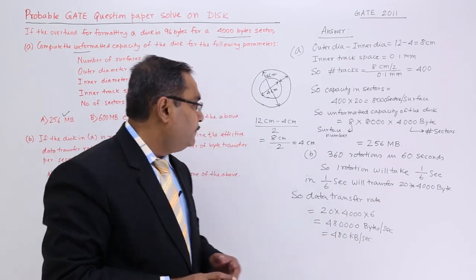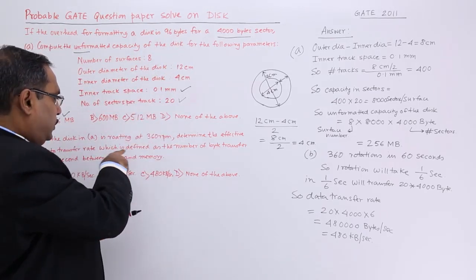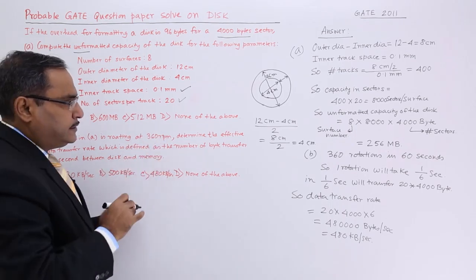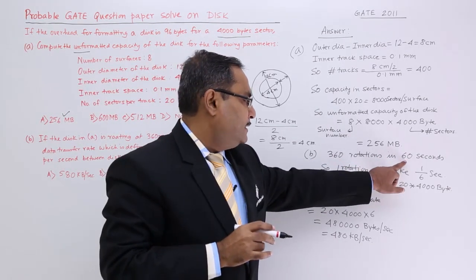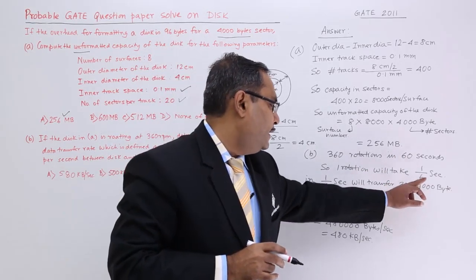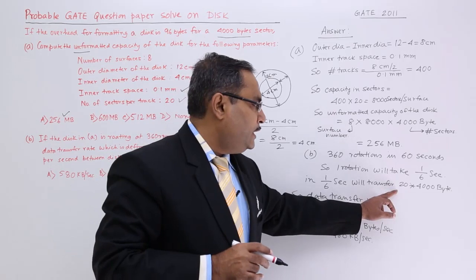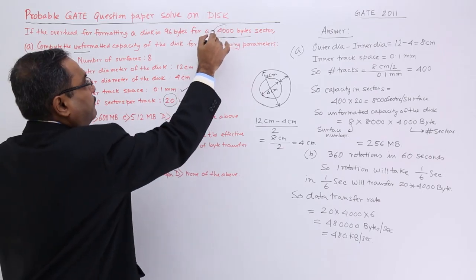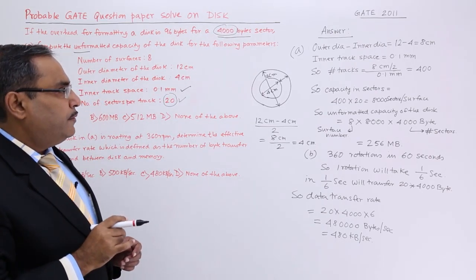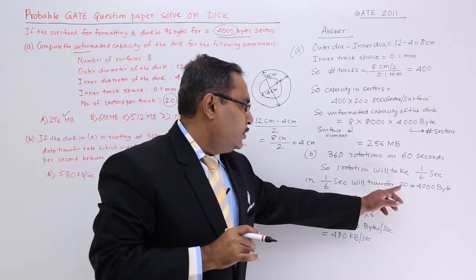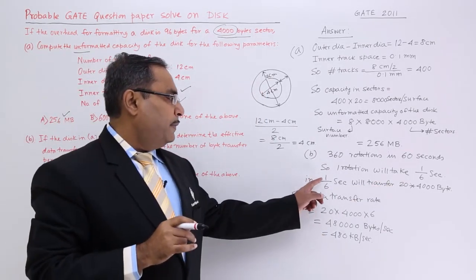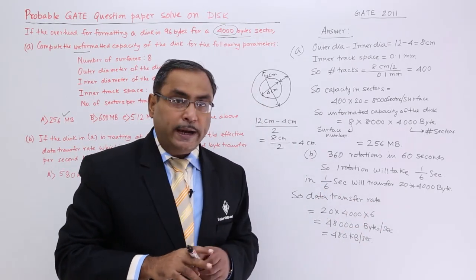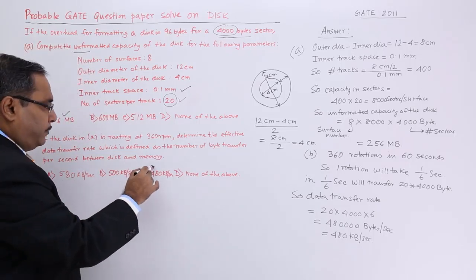So 20 × 4000 bytes are transferred in 1/6 second. For 1 second, we multiply by 6: 20 × 4000 × 6 = 480,000 bytes per second = 480 kilobytes per second. That is the effective data transfer rate.